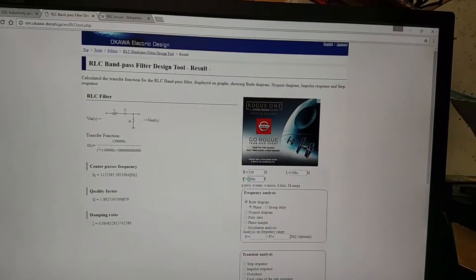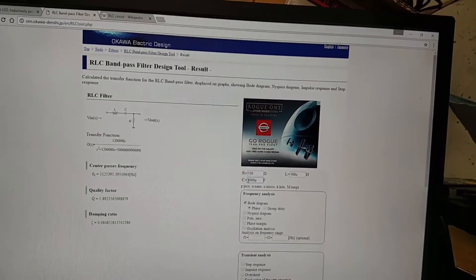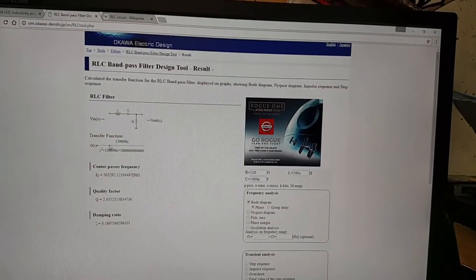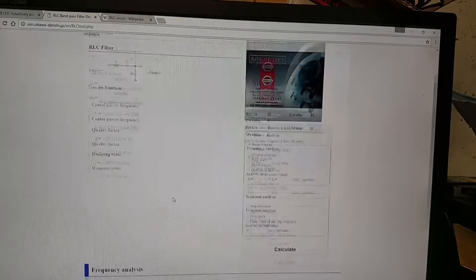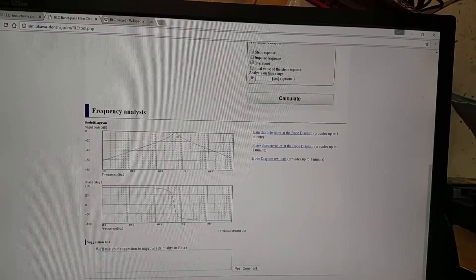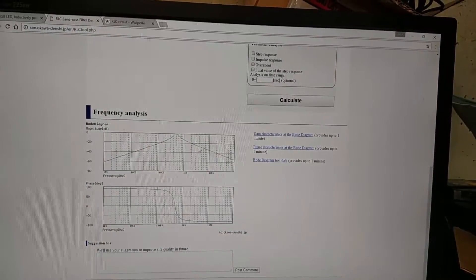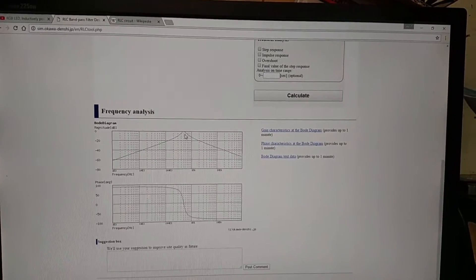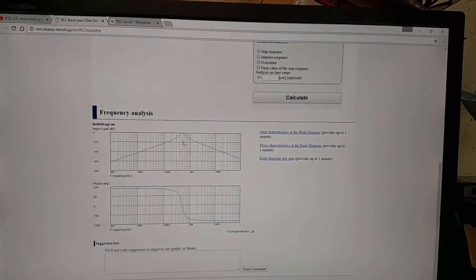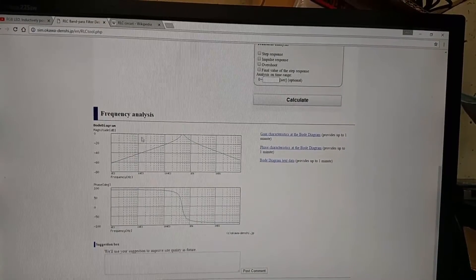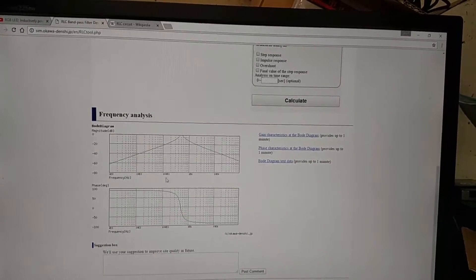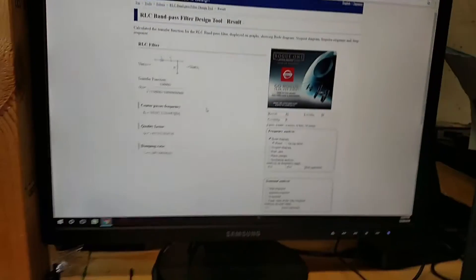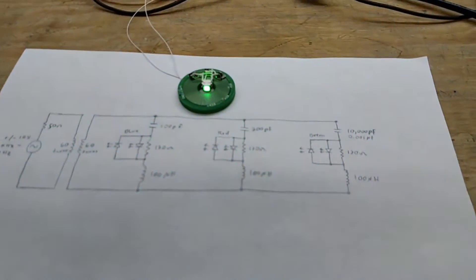If we change that to 10,000 picofarad and calculate, that puts us down at our 500 kilohertz range. You can see as we get to lower frequency, it's not as sharp of a notch anymore, it's spread out. That's why you have to move the one way farther down so it doesn't overlap. The scale ended up changing too. That's essentially what's going on here.